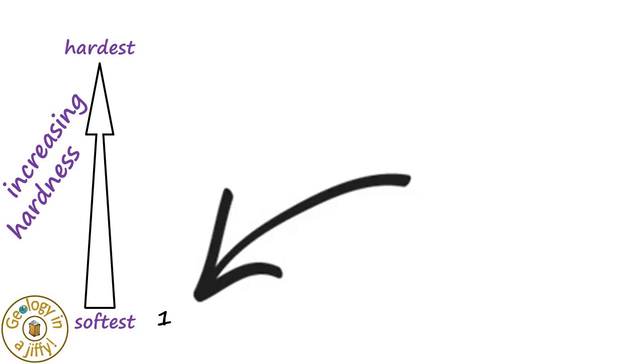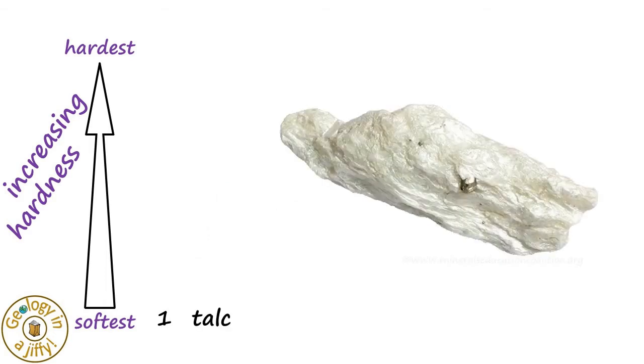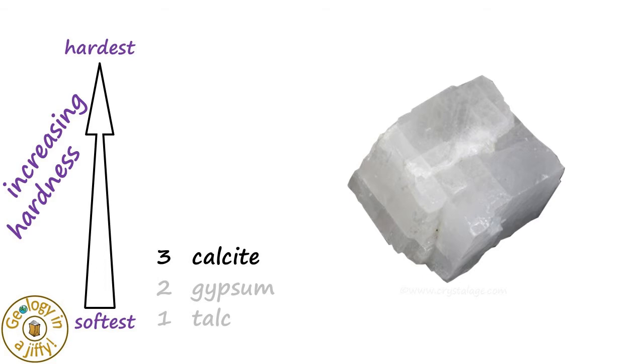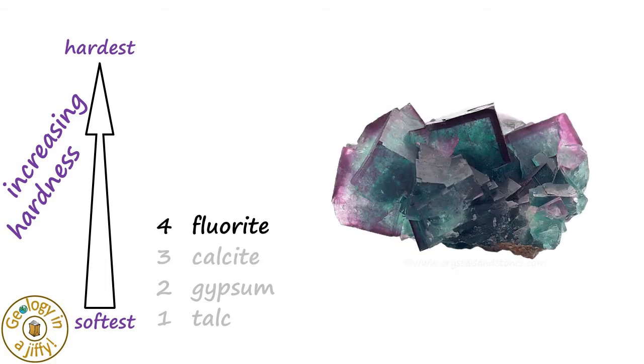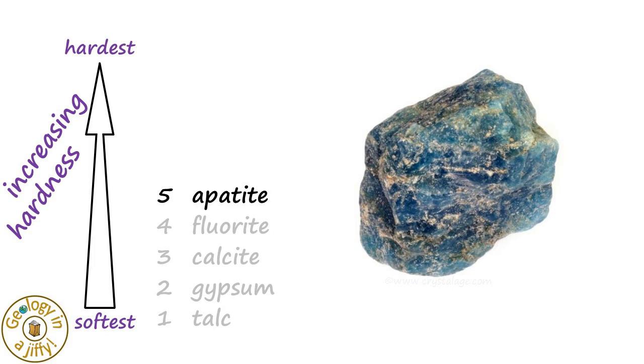Mohs started his scale here at one with his softest mineral, talc, a soft clay mineral. Then gypsum, then the carbonate mineral calcite, then fluorite, also known as fluorspar, then apatite, found in bones and teeth.